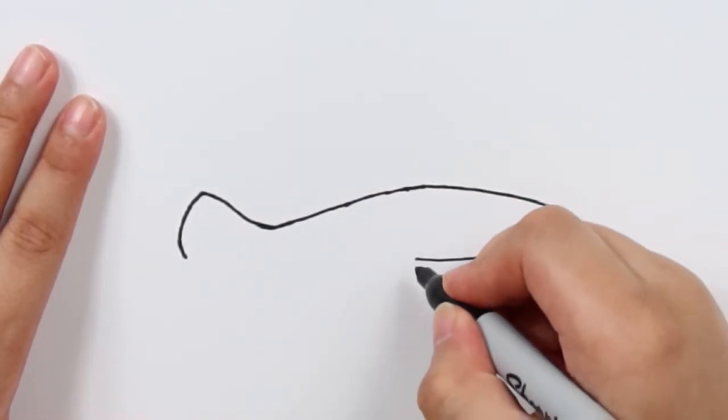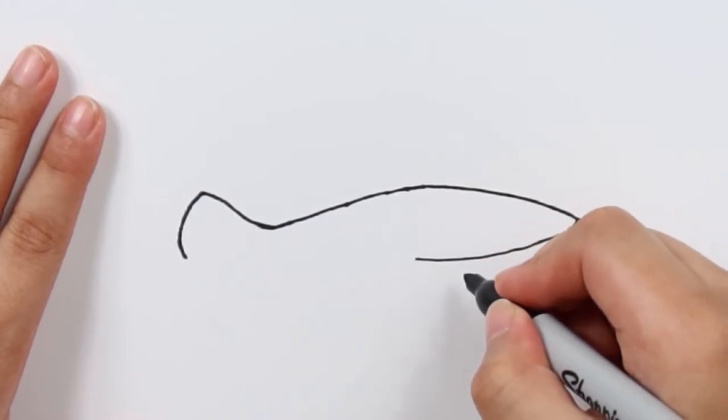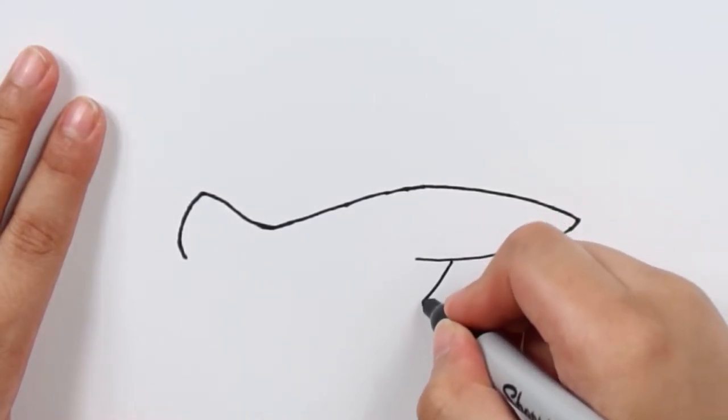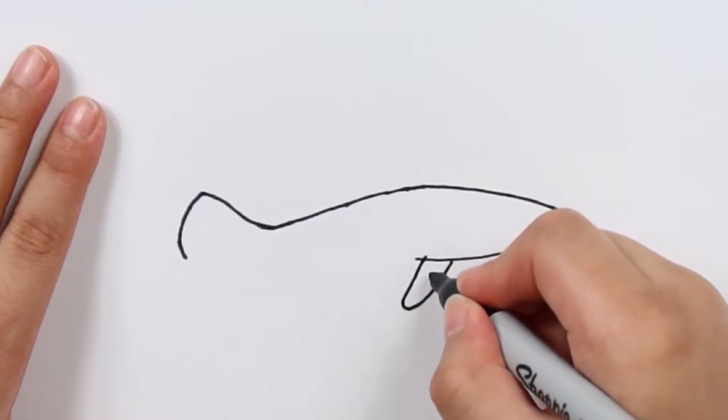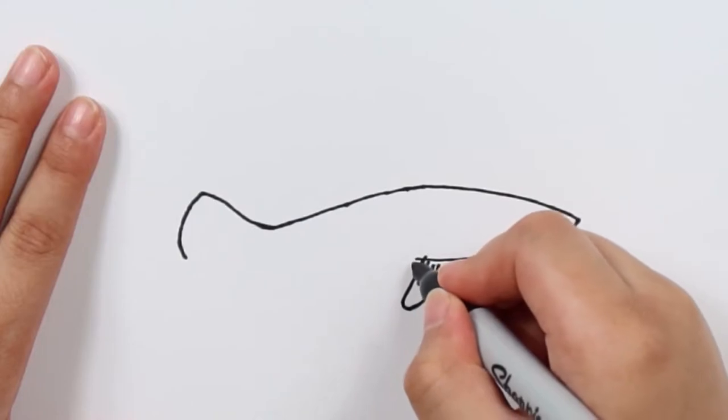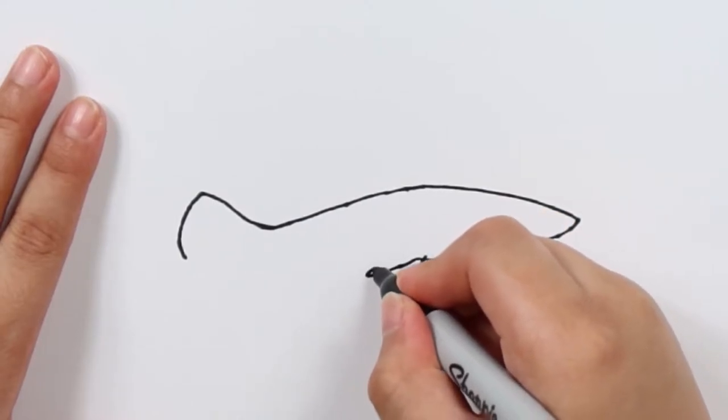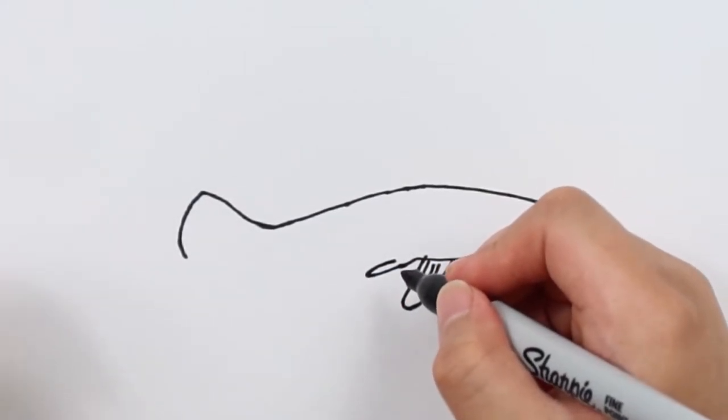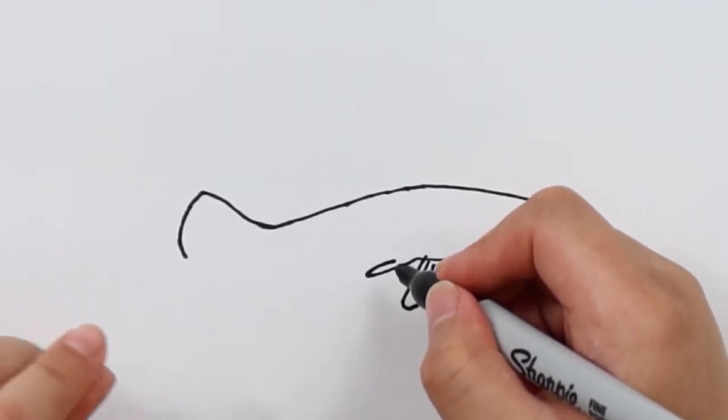Over here you can draw the pelvic fin. And you can do this because this is going to be a male swordtail. Females do not have this sword on their tail.